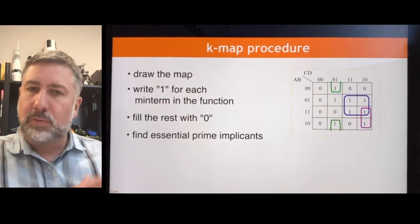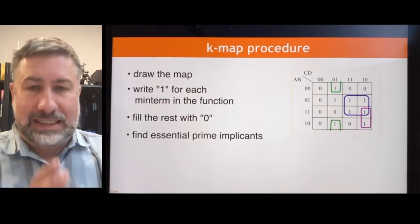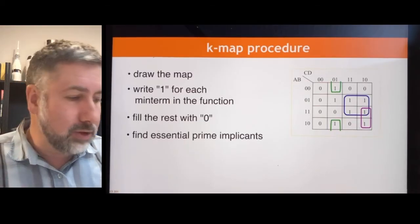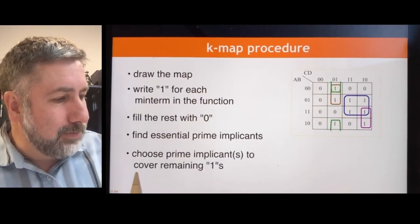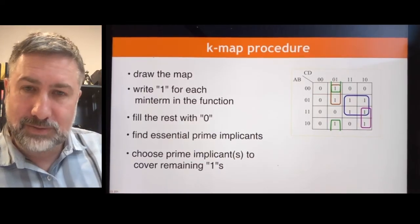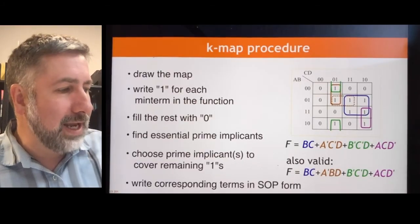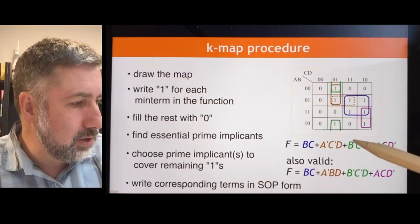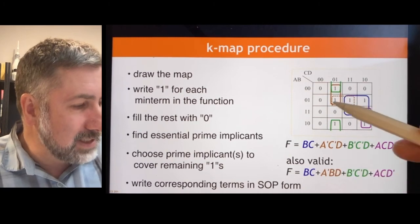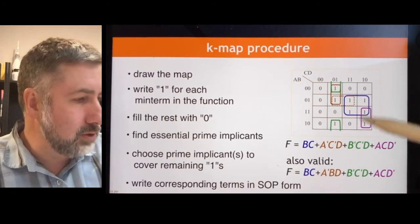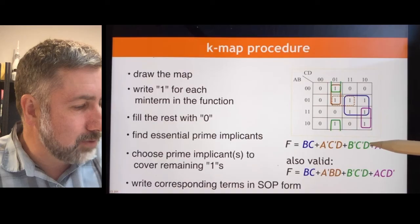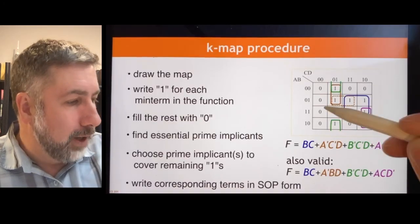The result is that there are sometimes more than one valid solution to a given simplification problem. There are good reasons, depending on your implementation, to pick one instead of the other, or sometimes to pick both. But in general, for the work we're doing here, you can just pick one. The final step is to choose a prime implicant to cover any term not covered by an essential prime implicant. There are two valid solutions to this example: BC (the blue one), A'C'D or A'BD — both are valid, but all solutions must include the essential prime implicants.